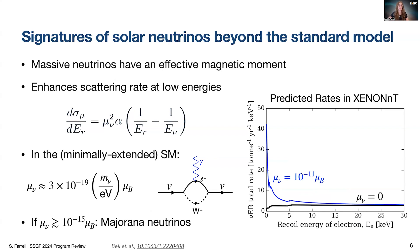This measurement in the XENONnT experiment amounts to detecting less than about 5 kilo electron volt enhancements in the electron scattering rate. But this is limited by how efficient our detector is right at this low energy threshold, as well as our treatment and understanding of how these low energy signals would appear in data compared to a host of backgrounds that we also observe.